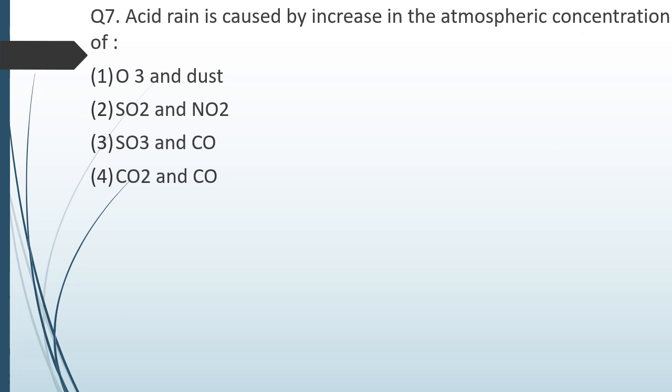Question number seven: acid rain is caused by an increase in atmospheric concentration of which of the following substances? The correct answer is option two: SO₂ and NO₂. These gases combine with water to form sulfuric acid and nitric acid respectively, which come down as acid rain.